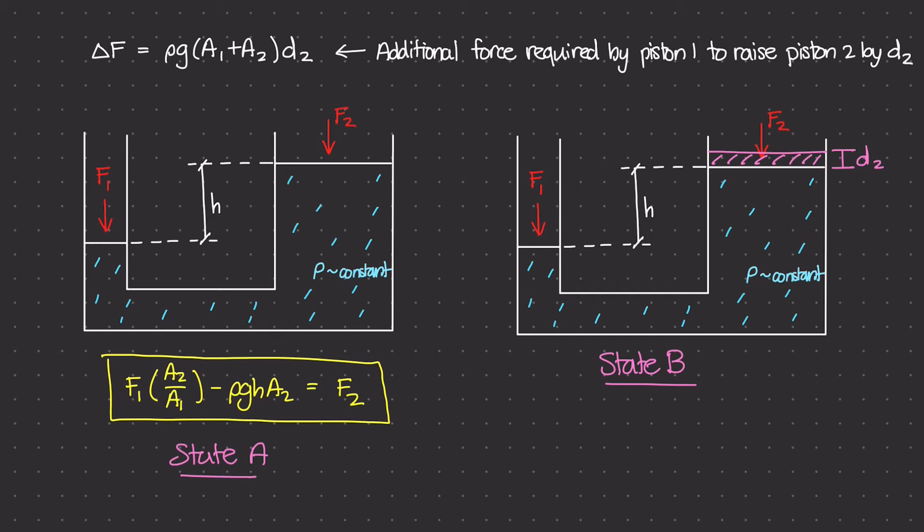Now, in order to get that to work, I have to move piston 1, which is this piston here, down by a larger amount. Why? Because area 1, this piston, is smaller. So I have to move a lot more liquid here to be able to move this small amount on piston 2 up by D2.